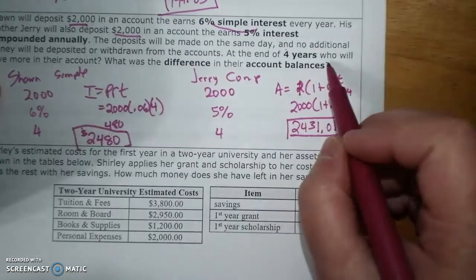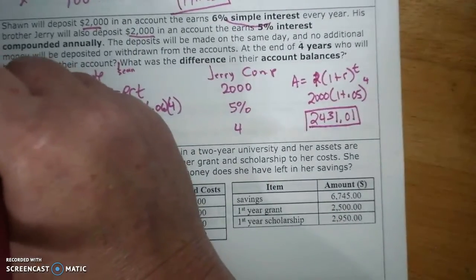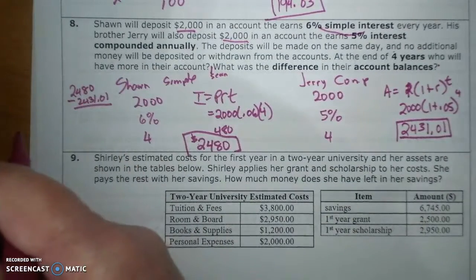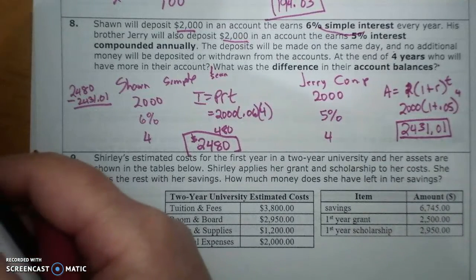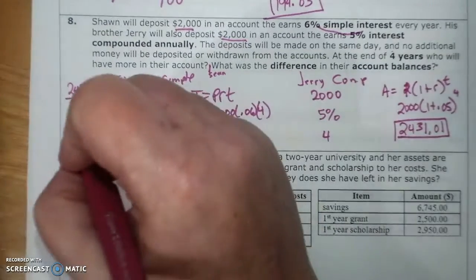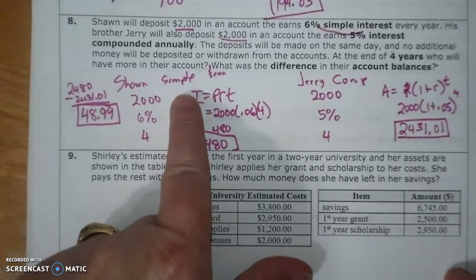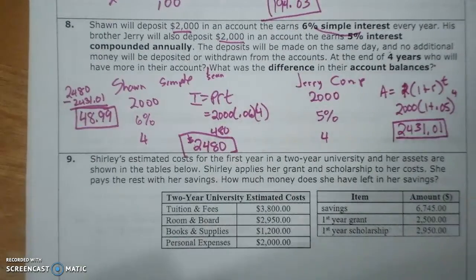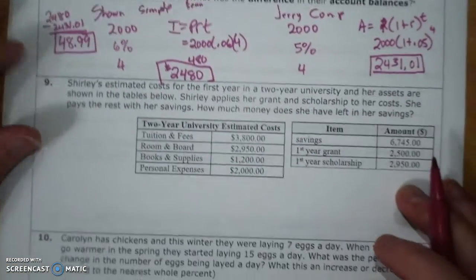At the end of the 5 years, who will have more? Sean. What was the difference? And so I have to do $2,480 minus $2,431.01, which equals $48.99. So when I'm going through this, I'm going to make some annotations, I'm going to make sure that I'm answering every single question. It said who will have more, what's the difference in their account balances.